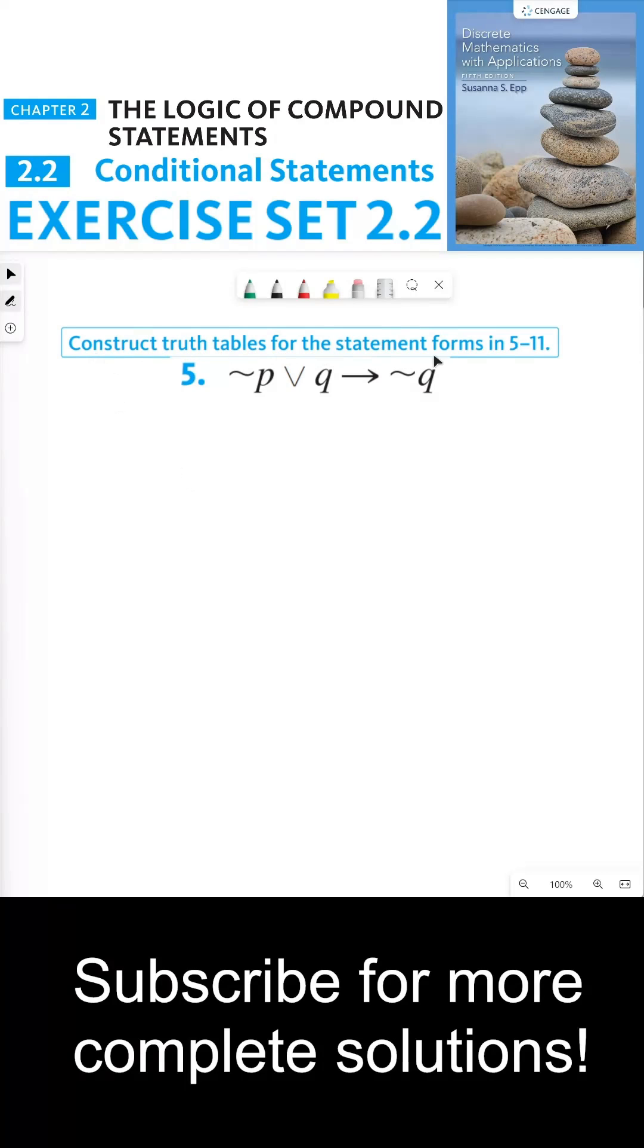Construct truth tables for the statement forms in 5 through 11. Here we have our statement form: not P or Q implies not Q. The thing that's new in this video is this conditional right here. We have a conditional, which means there's an if and a then in this statement form.